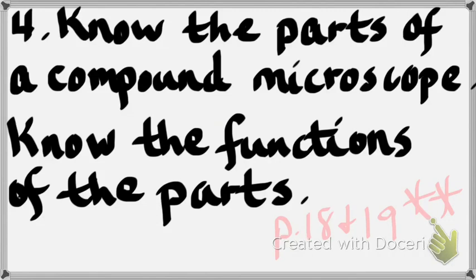I put two stars on number four because many questions on your test will come from it. Pages 18 and 19 are where we went over the parts of the compound light microscope and their functions. Make sure you spend time reviewing the parts and functions of the compound light microscope. Our compound light microscope had three objectives: scanning, low power, and high power. We don't have oil on that scope.